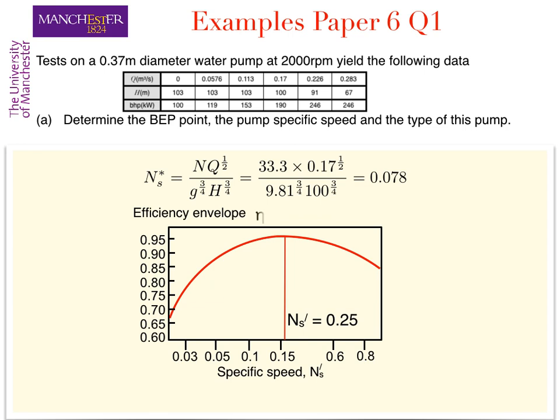Onto this we can now plot the specific graphs for the different classes of pump. So the radial flow pump is shown in green here, a mixed flow pump is shown in blue here, and an axial flow pump is shown in purple here.